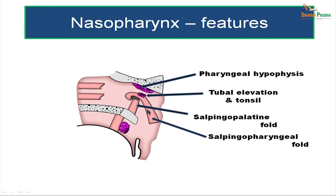From the lower end of the tubal elevation, a mucosal fold called the salpingopharyngeal fold descends into the pharynx, with the salpingopharyngeus muscle deep to it. Another fold — the salpingopalatine fold — connects the auditory tube to the soft palate, with the levator veli palatini muscle deep to it.